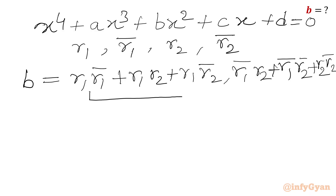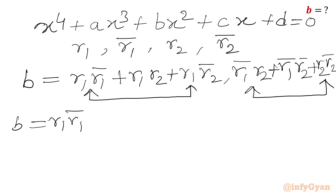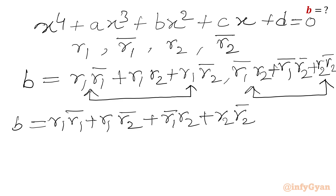We take r1 common from the first grouping and r2 common from the last grouping, and write the remaining two terms as they are. So b = r1·(r1_bar + r2_bar) + r2·(r1_bar + r2_bar) + r1·r2 + r1_bar·r2_bar, which simplifies to (r1 + r2)·(r1_bar + r2_bar) + r1·r2 + r1_bar·r2_bar.